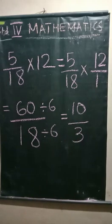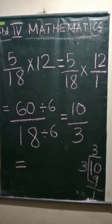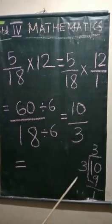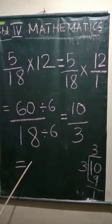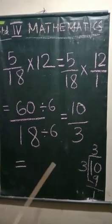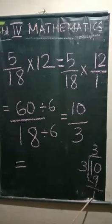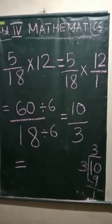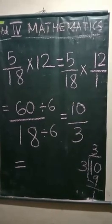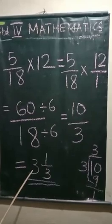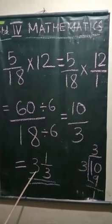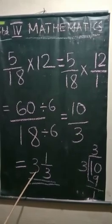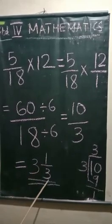So, change it into a mixed number. Three is the whole number, one is the numerator, three is the denominator. And finally, we get the answer: three and one by three.